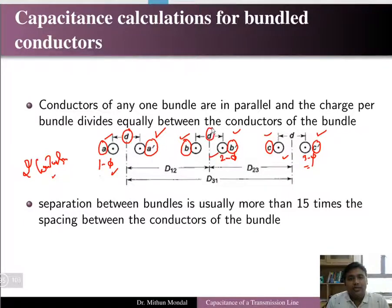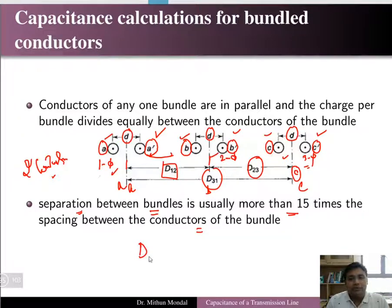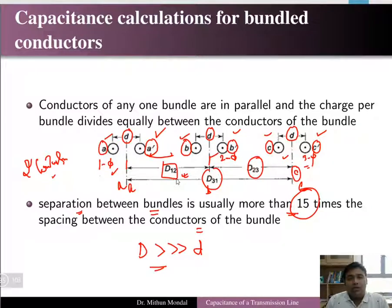The center-to-center distance between phases are D12 between phase A and phase B, D23 between phase B and C, and D31 between phase A and C. In bundle conductors, the separation between bundles is usually 15 times more than the spacing between conductors within a bundle. So D, the distance between bundles, is very much greater than d, the spacing within the bundle.